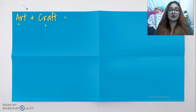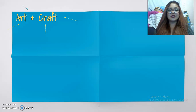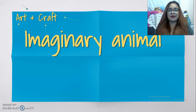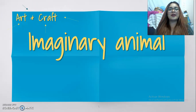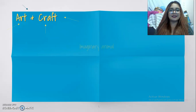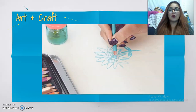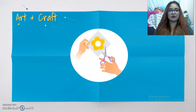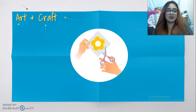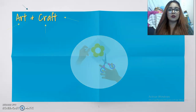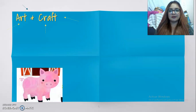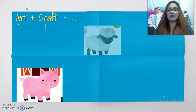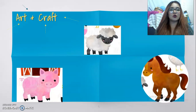This class is going to be a little different. Let's make art and craft. Pay attention to the next instructions. We're going to make an imaginary animal. We have to draw or cut some pictures about farm animals. I choose a pig, a sheep, and a horse.